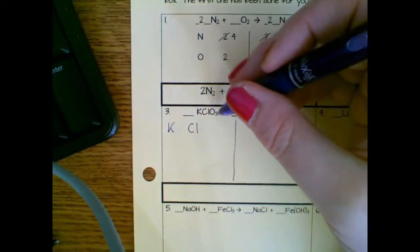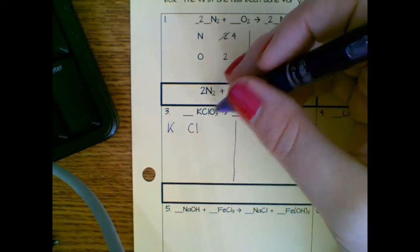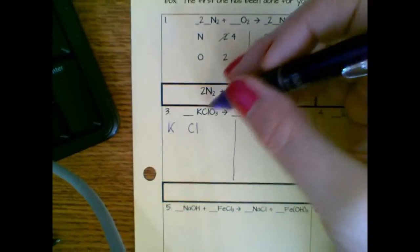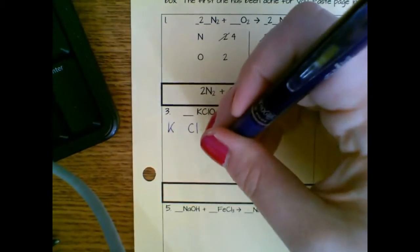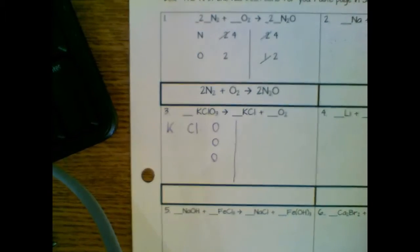But I have a three here. This three cannot be changed. That means if I put anything in here, it's going to be a multiple of three now. So I have three O's. So I'm just going to write three O's just like that.